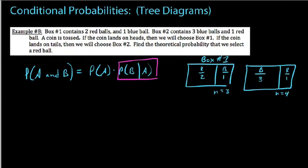It says, okay, now we're going to flip a coin. If the coin lands on heads, we're going to choose Box number 1. If the coin lands on tails, then we're going to choose Box number 2. But the question is this: find the theoretical probability that we select a red ball. So what you have to recognize is we have red balls both in our first box and our second box. We can see the proportion to which each box is red.